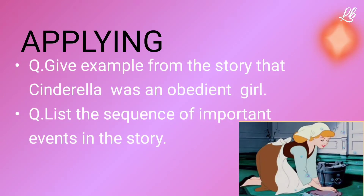Applying: Give an example from the story that shows Cinderella was an obedient girl. List the sequence of important events in the story. At this third level, students must show that they can apply the information they have learned.